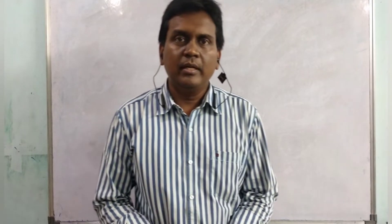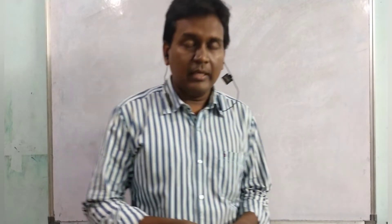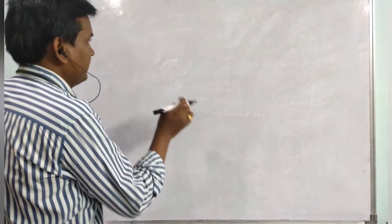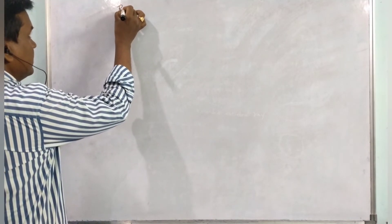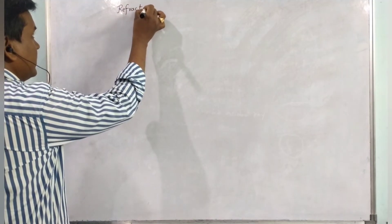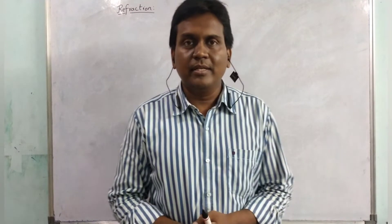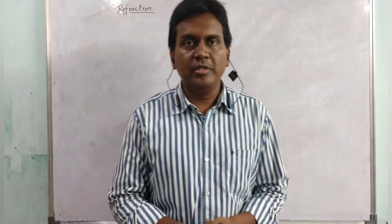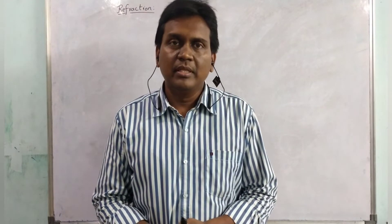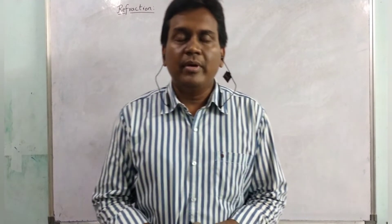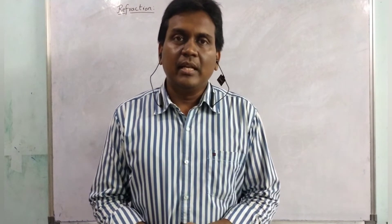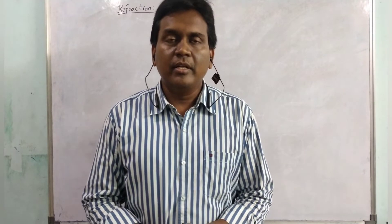Hello everyone, welcome back. In this session we are going to have a look at refraction and what happens during refraction, and some other terms like refractive index. From childhood onwards we learned that light travels in a straight line. Light travels in a straight line in a homogeneous medium, but when light enters a heterogeneous medium some changes take place, and refraction also occurs. Whenever light travels from one medium to another, the light ray deviates from its original path — this deviation is called refraction of light.